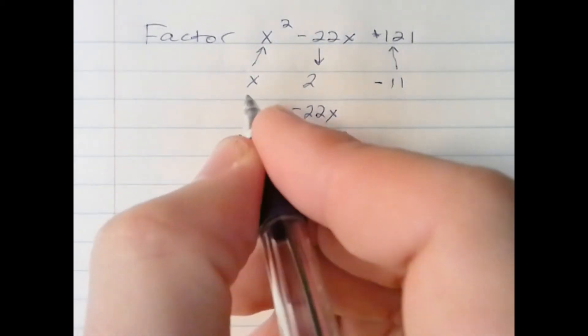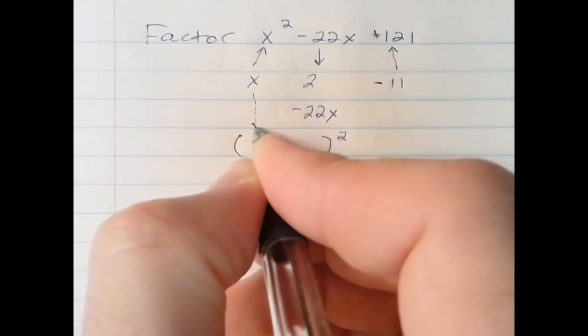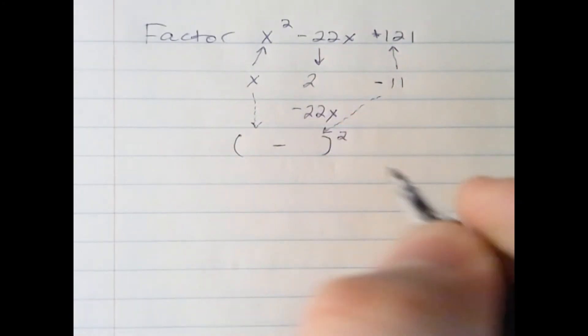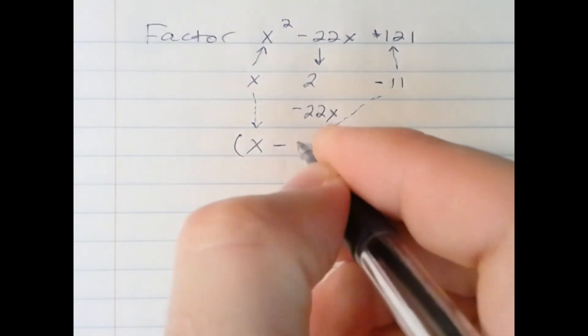And the two items we use are simply the square root of the first term, and the square root of the second term, x minus 11.